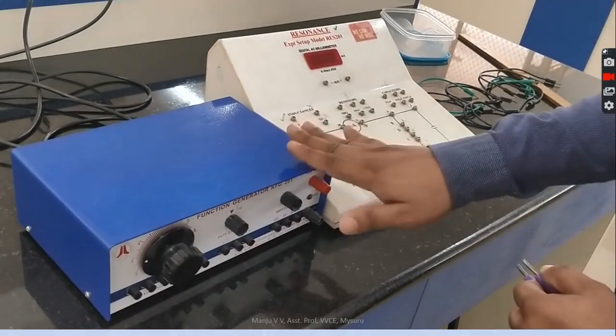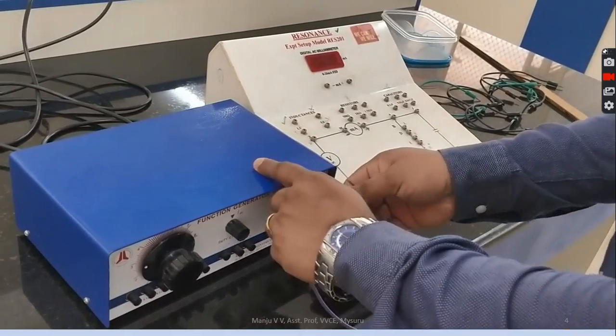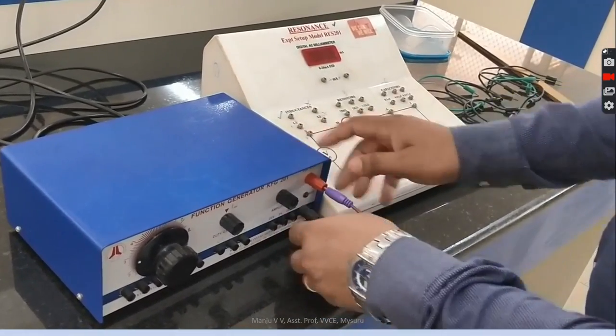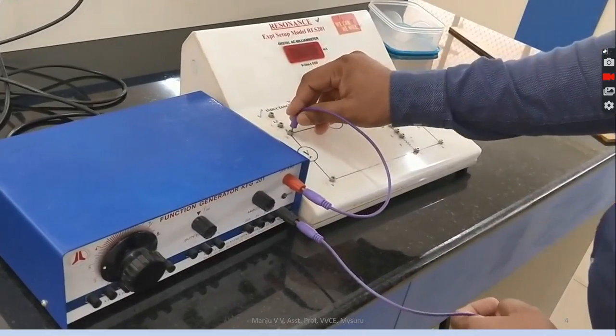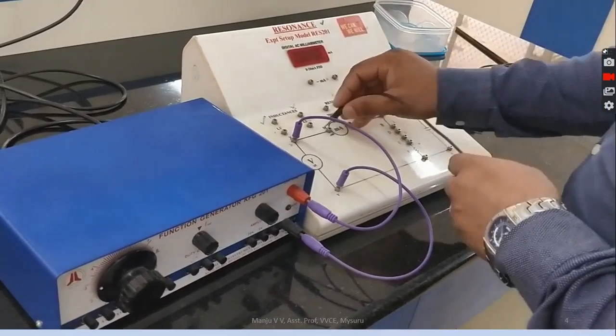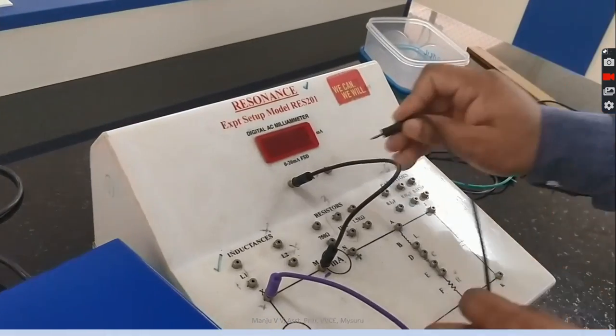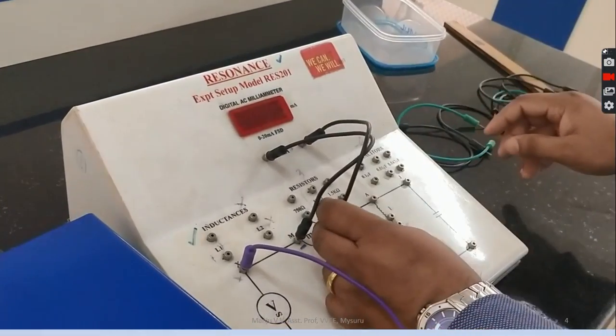For the circuit connections, we have the functional generator and the circuit board. Connect from source of the frequency oscillator to the circuit board source, and connect the millimeter negative terminal to the negative terminal and positive to positive.